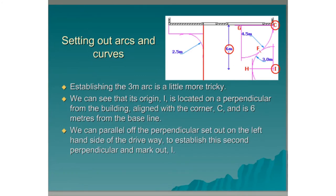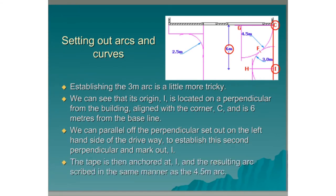We can parallel off the perpendicular set out on the left hand side of the driveway to establish this second perpendicular and mark out I. The tape is then anchored at I and the resulting arc scribed in the same manner as the 4.5 metre arc.